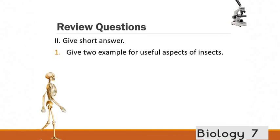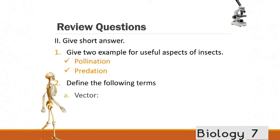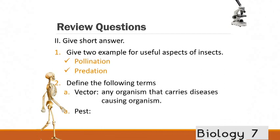Give a short answer for this. Give two examples for useful aspects of insects. Of course, pollination. Predation as well. Define the following terms. Vector. Pest. So a vector is any organism that carries diseases or a disease-causing organism. And a pest is any harmful insect or small animal.